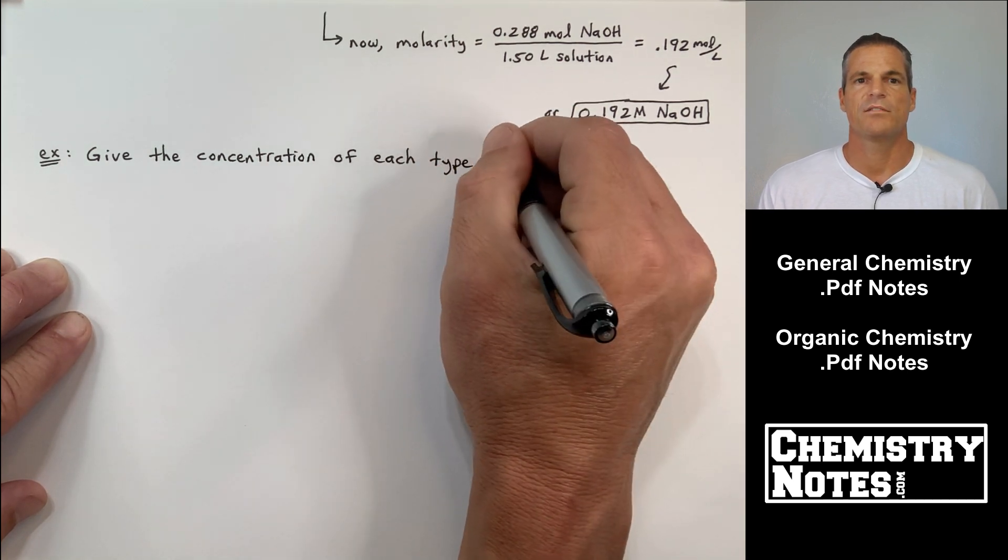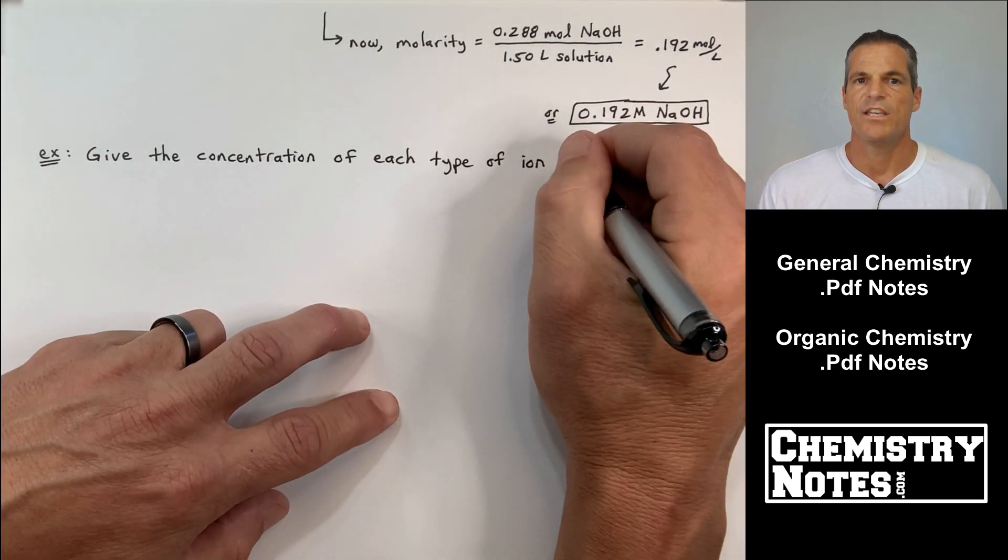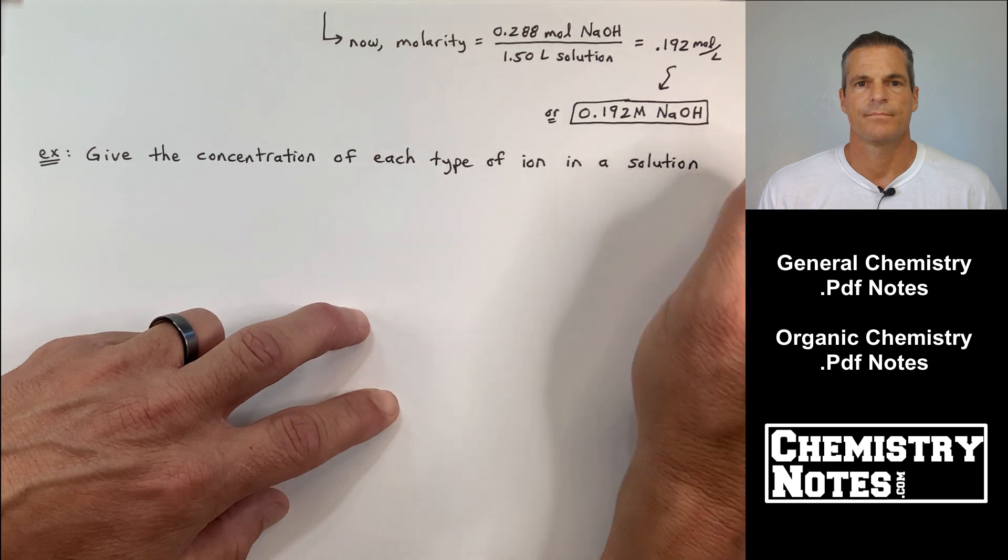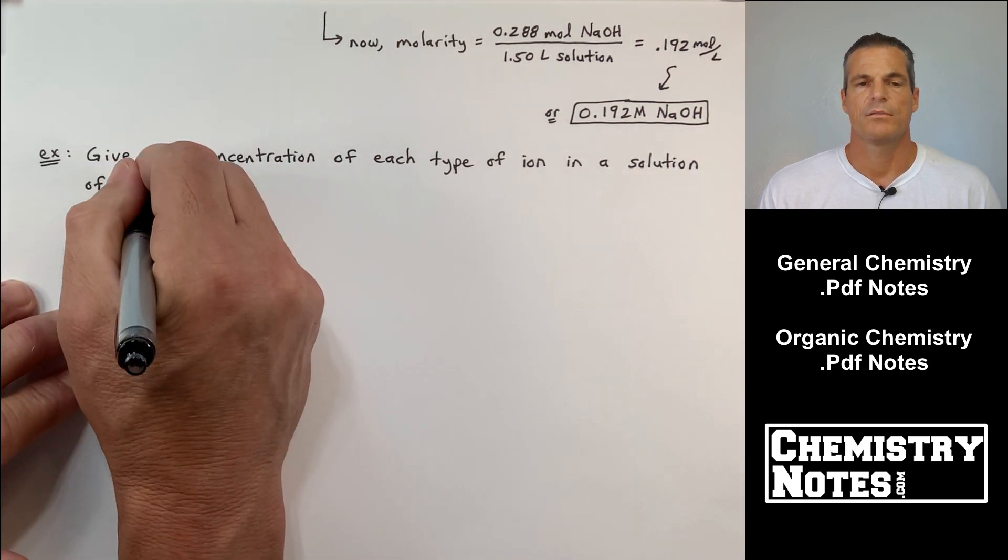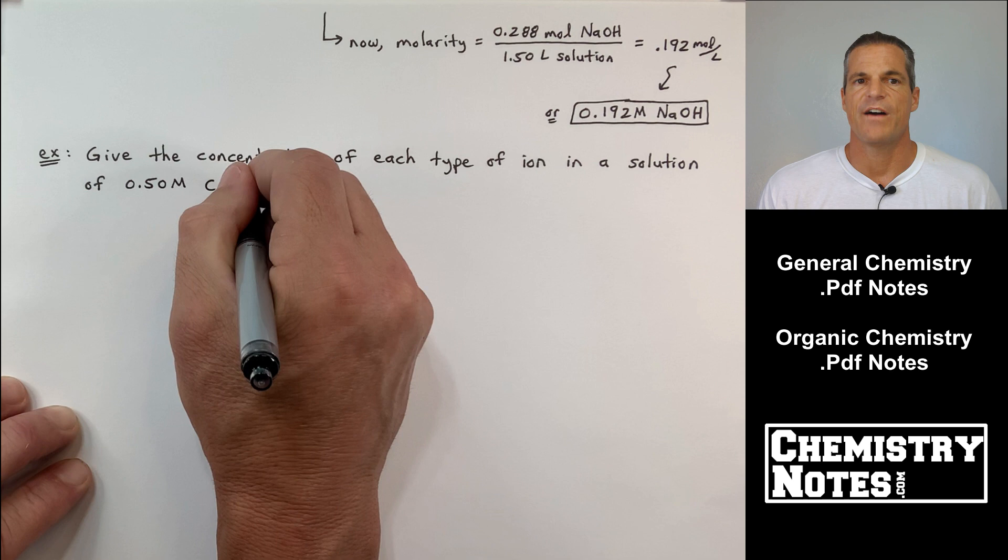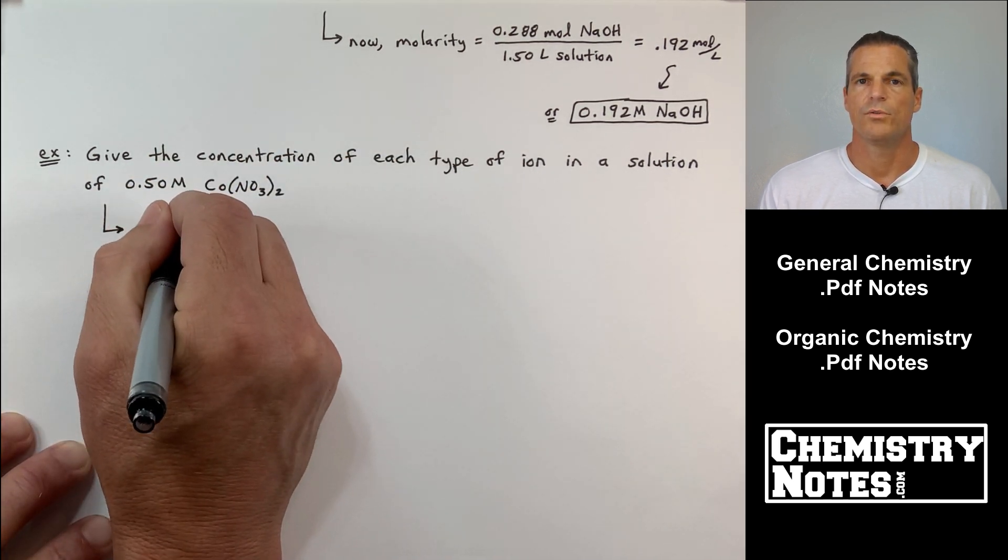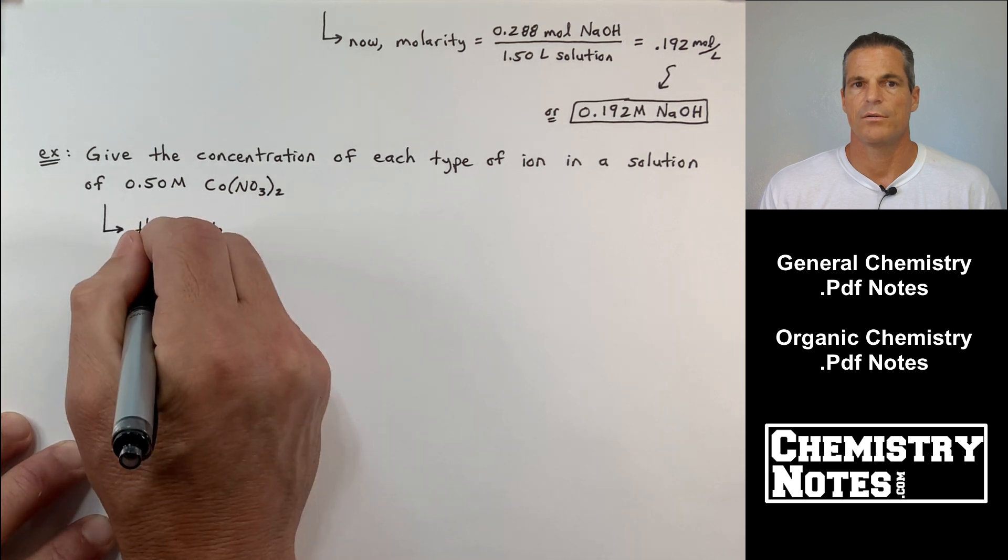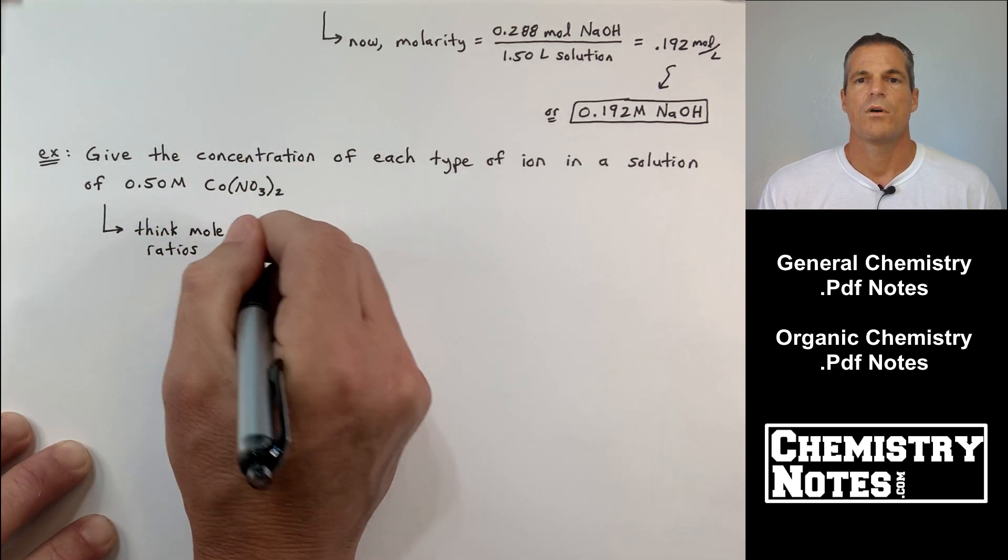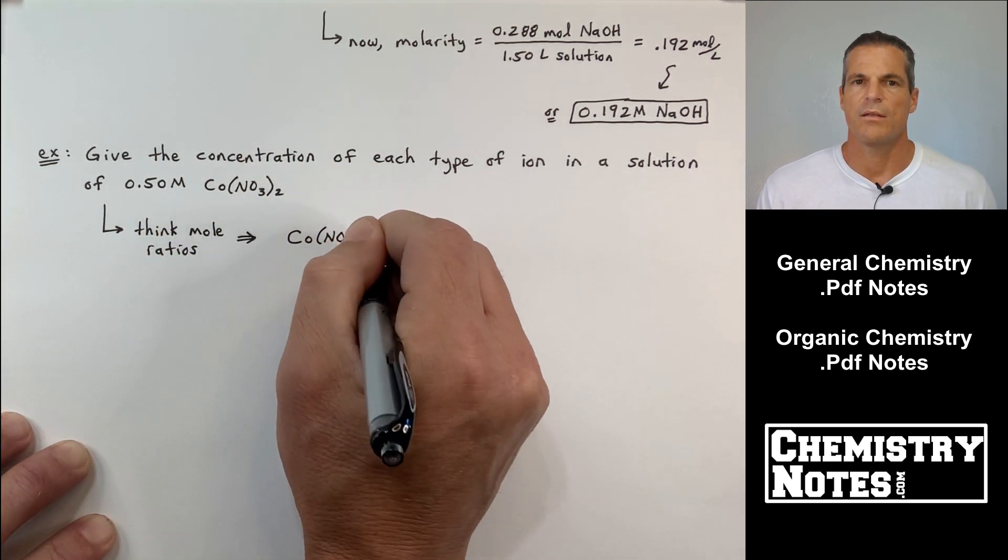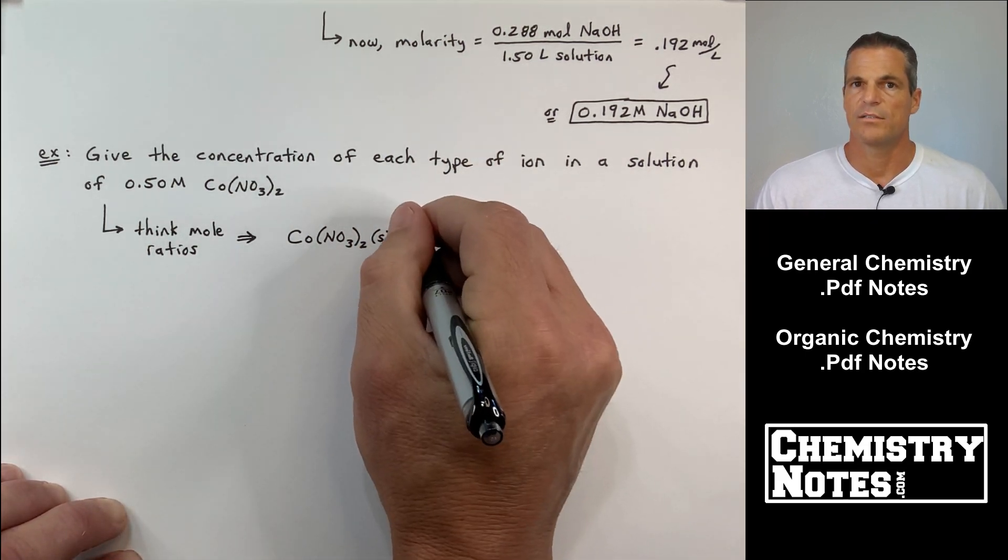Example: give the concentration of each type of ion in a solution of 0.50 molar cobalt-2 nitrate, Co(NO3)2. Well, if we think mole ratios here, each type of ion, we only have two ions, right? We have a cation, cobalt-2 plus, and then we have two NO3 minuses.